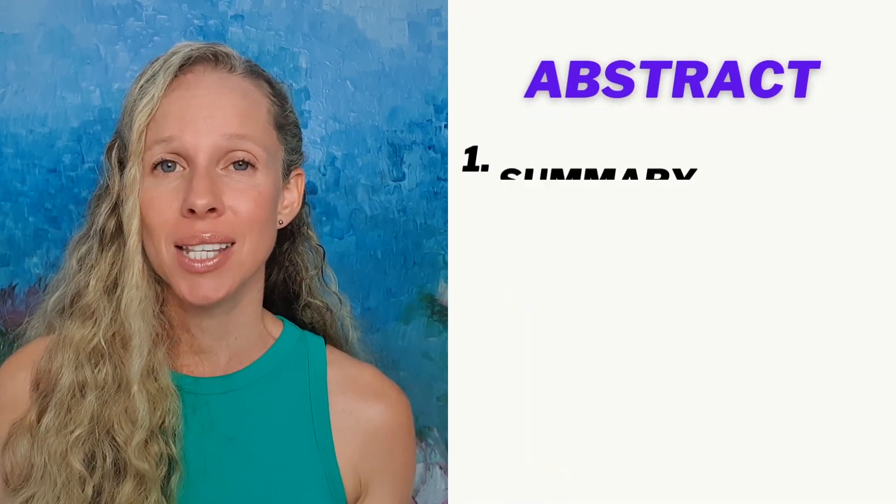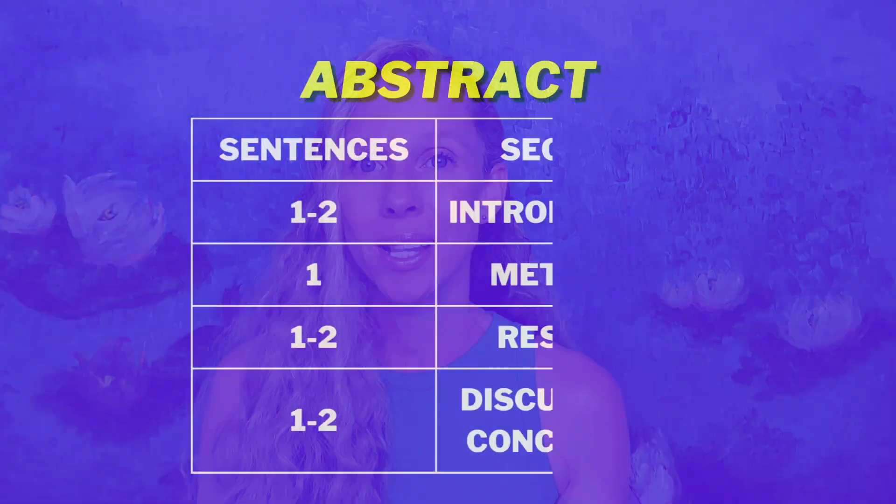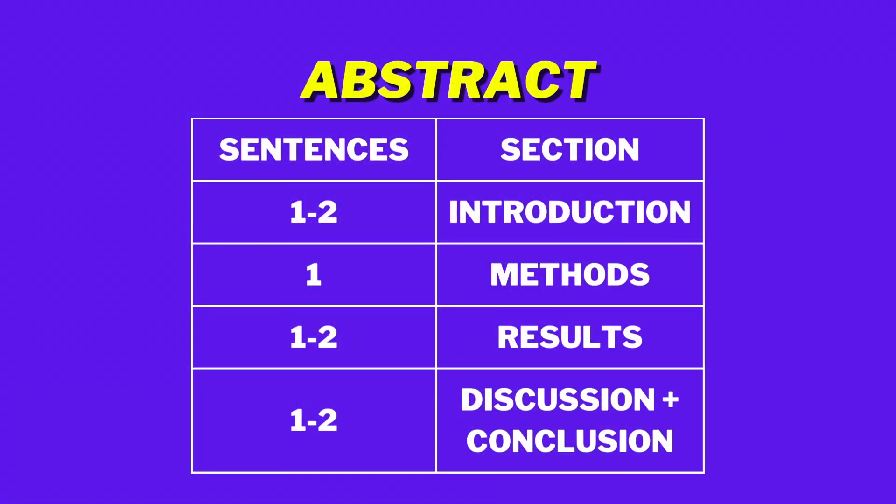We then write the abstract, which is essentially a summary of your entire scientific report — which by the way you've now written. What I find most helpful is to grab one to two sentences from my introduction that talk about the general background and significance of my study, one sentence of my methods, one to two sentences of my results, and one to two sentences of my discussion and conclusion.